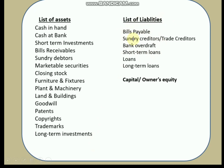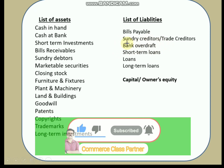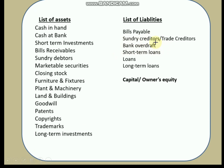There are some liabilities also: bills payable, sundry creditors (otherwise known as trade creditors). Note that sundry debtors are an asset, while sundry creditors are a liability. Bank overdraft — where we withdraw money more than what we have deposited — is a current liability. Then short-term loans, long-term loans, and capital or owners' equity. Capital is otherwise known as owners' equity and is shown on the liability side of the balance sheet, as it is technically a liability for the businessman.